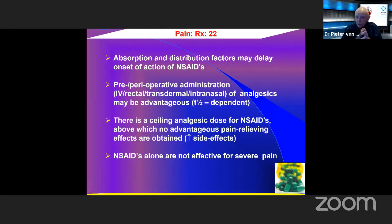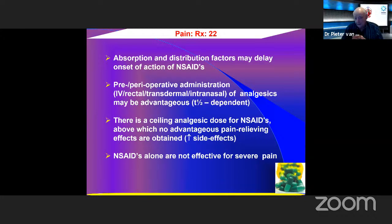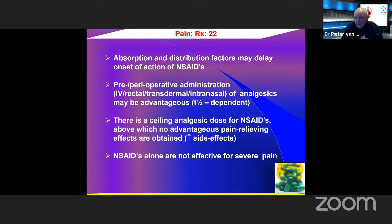Absorption and distribution factors may delay the onset of non-steroidals, which is why pre- and peri-operative administration via intravenous, rectal, transdermal, or intranasal routes may be advantageous depending on the half-life of the drug. It's advantageous to give analgesia in advance of a painful procedure so that adequate blood levels are achieved and pain is suppressed during and after the operative procedure.